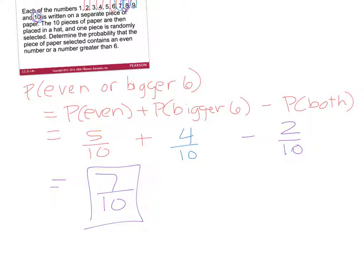So if we add 5 plus 4 we get 9, then 9 minus 2 gives us 7 out of 10. That is the probability of getting an even number or a number bigger than 6. There's nothing wrong with using the formula, but you could also do this problem more easily by just doing it visually.